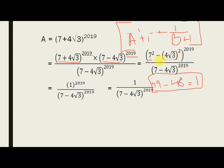So, 1 divided by 7 minus 4 root 3 to the power 2019. As we divided it also by the same number. Fine.